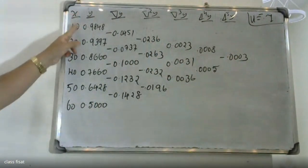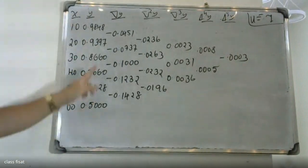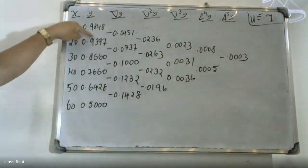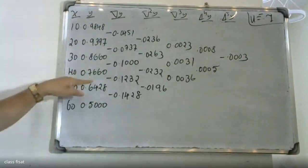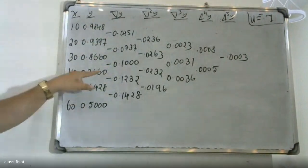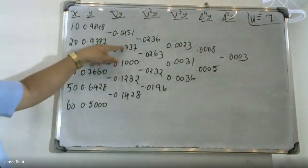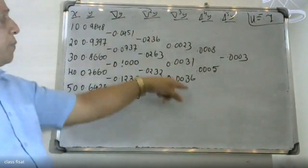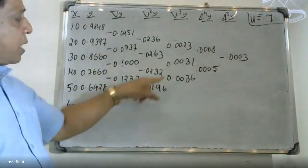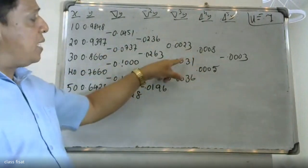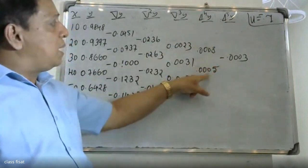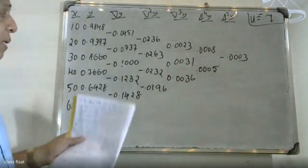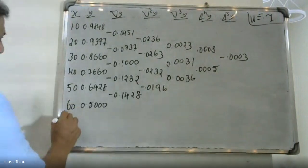From the table, we identify the values needed at the last row (xn = 60): Δy, Δ²y, Δ³y (del cube y), Δ⁴y (del raise to 4 y), and Δ⁵y (del raise to 5 y). These are the values we will substitute into the backward interpolation formula.